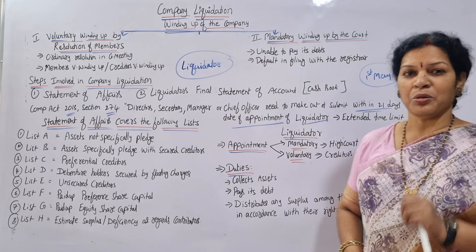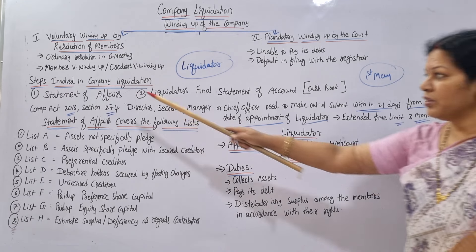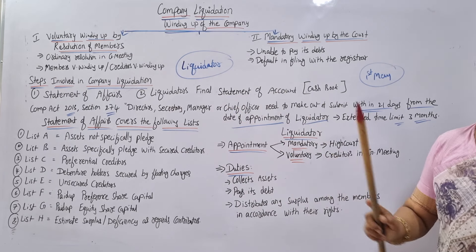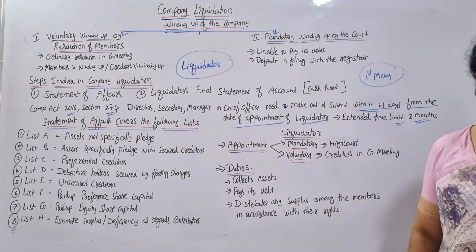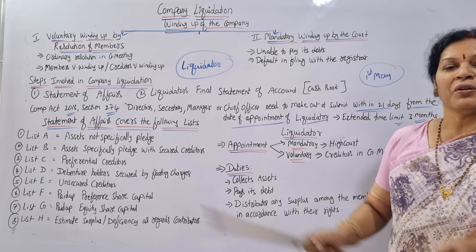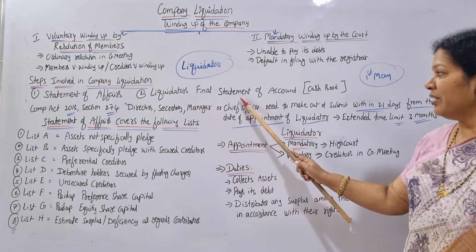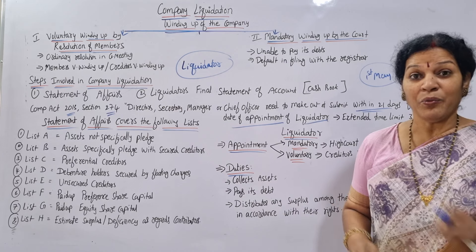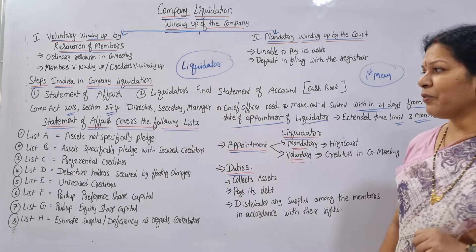Once the Statement of Affairs is ready, the liquidator enters the job. He has to prepare the Liquidator's Final Statement of Accounts. The Statement of Affairs is prepared by the company; once it is done, the Liquidator's Final Statement of Accounts is prepared by the liquidator. This is very easy — it looks just like a cash book. On the debit side are receipts and on the credit side are payments. The liquidator prepares this statement showing what is being received and what has to be paid and settled.